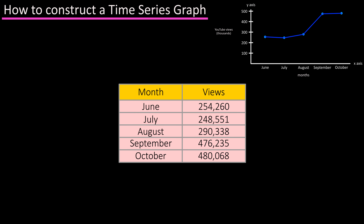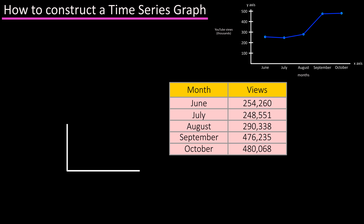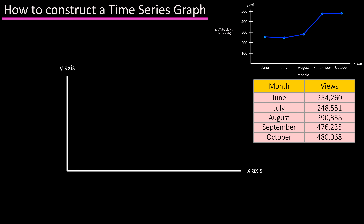The number of video views for a YouTube channel over a five-month period. To do this you start by drawing an x and y axis. Label the x-axis as months and write in the different months from the data table at equal distances from one another on the x-axis. Then label the y-axis as video views in the thousands.